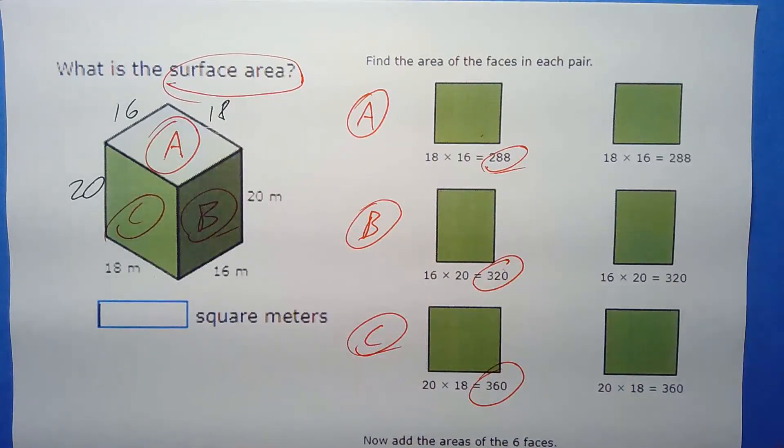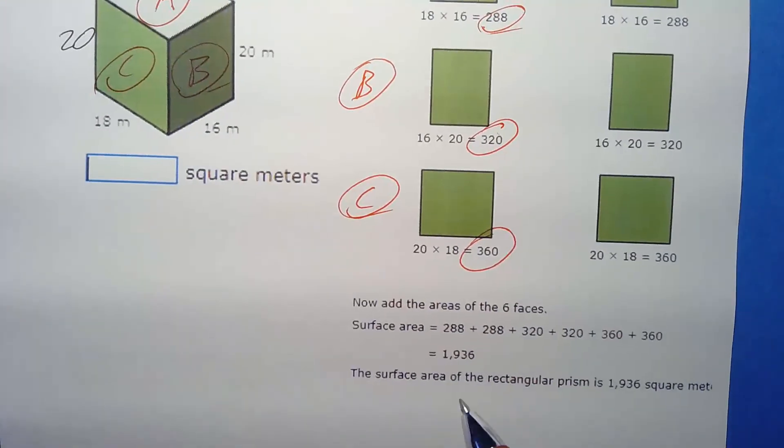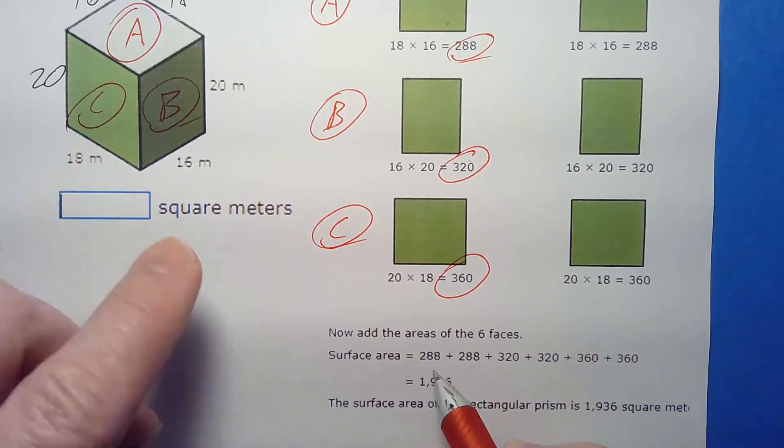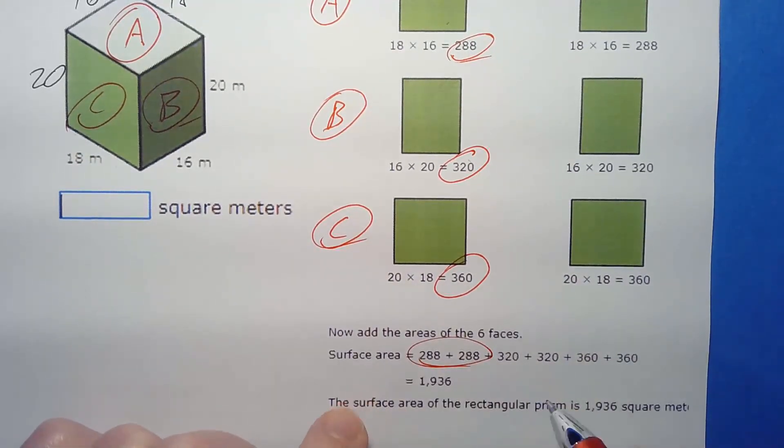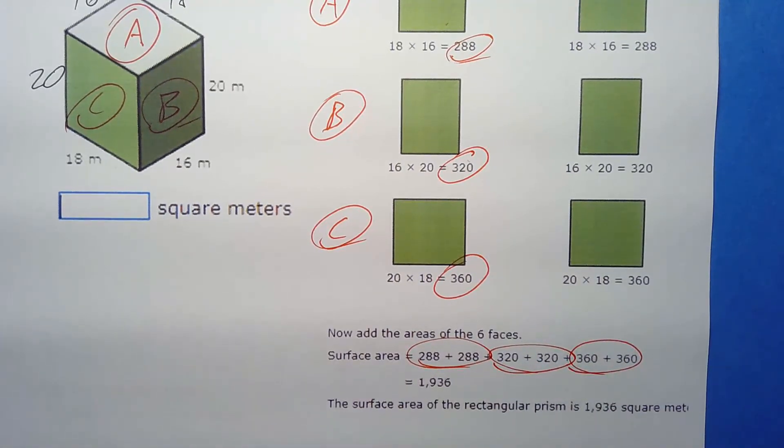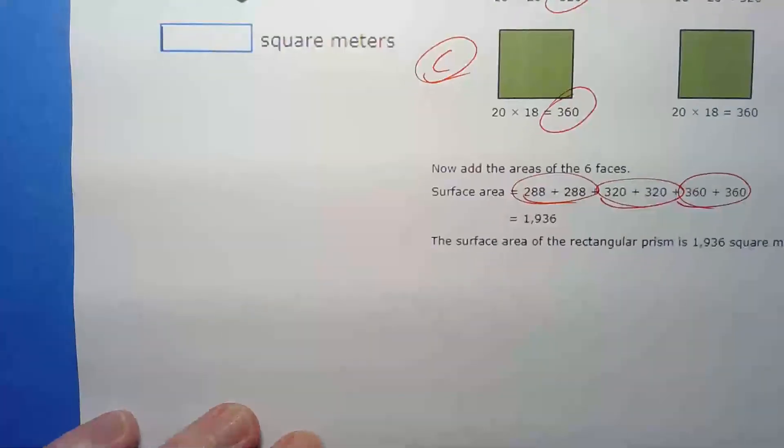Now again, you can do it all out like this and multiply it. You're gonna find that surface A has got 288 square meters, by the way notice it's square meters this time. B is 320, this is 360. But again, notice you got to multiply times two because there's a front and a back, a top and a bottom.